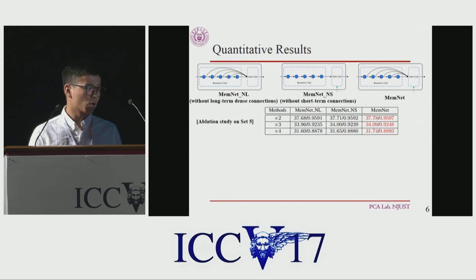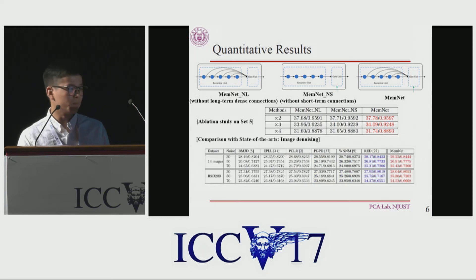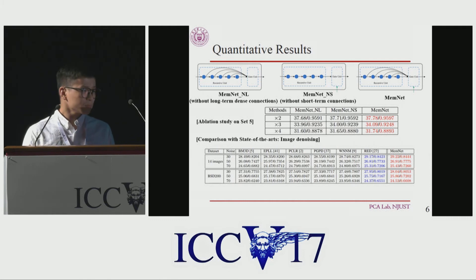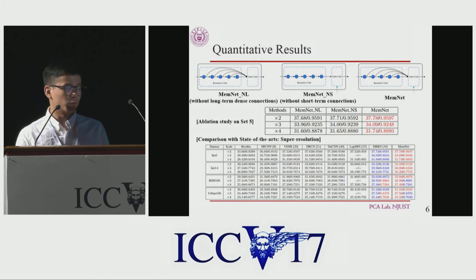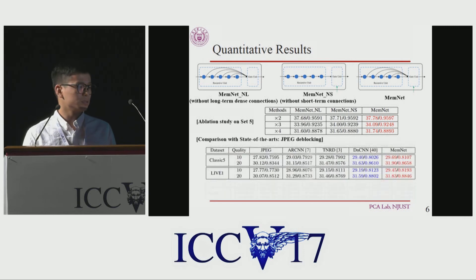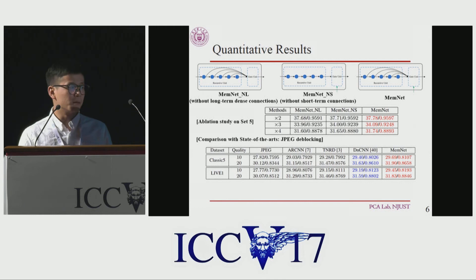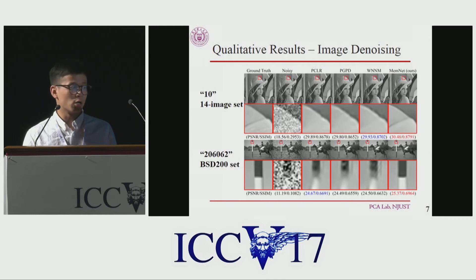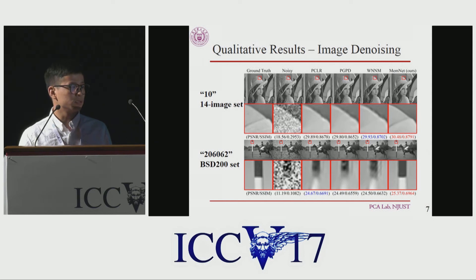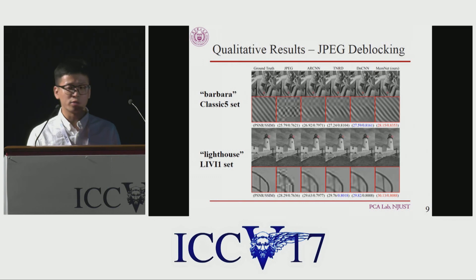We also compare our model with state-of-the-art models on image denoising on popular benchmarks, and also on super-resolution and JPEG artifact removal. In almost all of those cases, we got the best performance compared to prior models. We also present some qualitative results of denoising, super-resolution, and JPEG artifact removal, where our model recovers better lines, curves, and patterns.